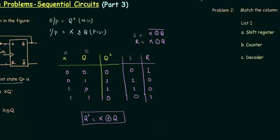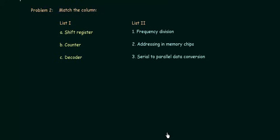Now we will move to match the column. In this we have list 1 and list 2. List 1 is having the components: shift register, counter, decoder, and list 2 is having the properties. I will solve for A and you have to solve for B and C. These two are homework for you and I will solve for A.